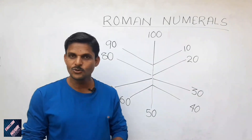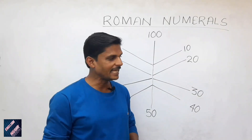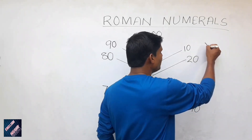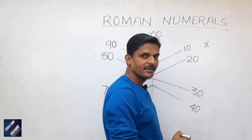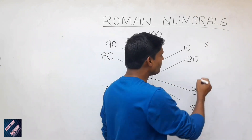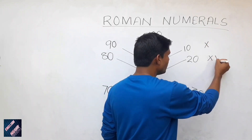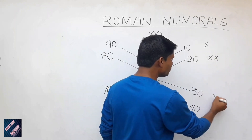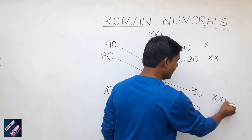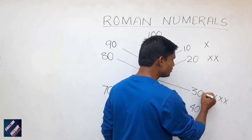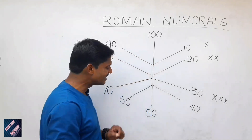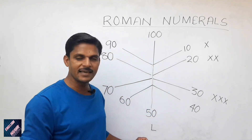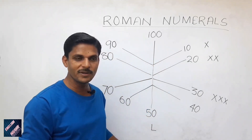Let's start. As we know, 10 is X — 10 is written as X in Roman numerals. 20 is written as XX. 30 is written as XXX. And 50 is written as L in Roman numerals.